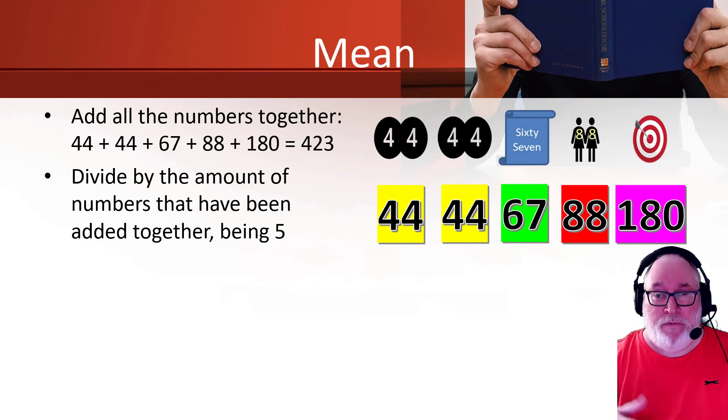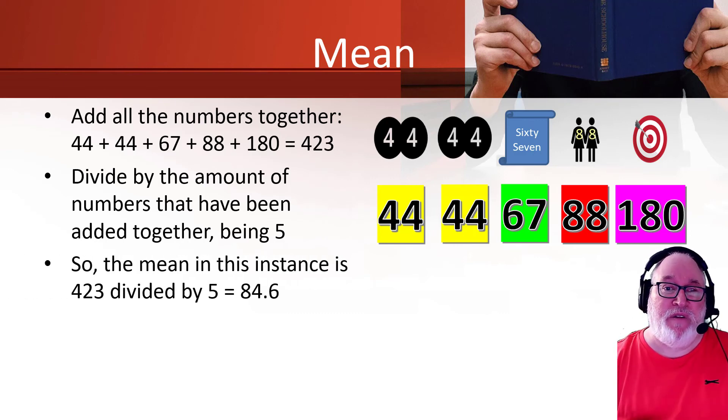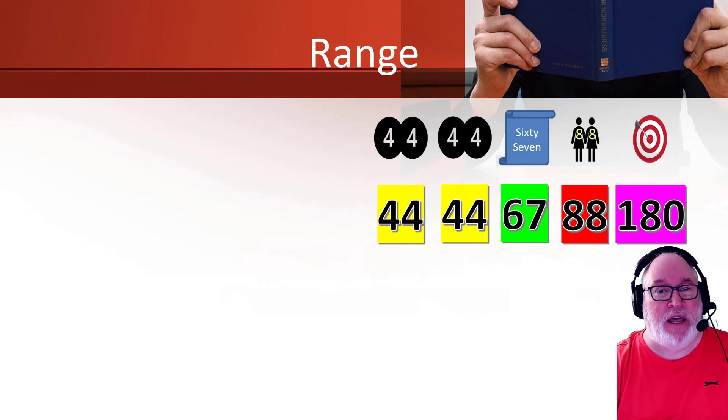So we've got 1, 44. 44, that's 2. 67, 3. 88, 4. 180 is 5. Therefore, 423 divided by 5, and that gives us 84.6. Therefore, the mean average is 84.6.